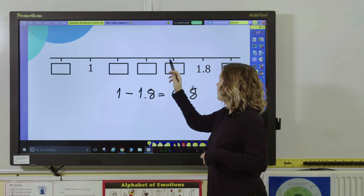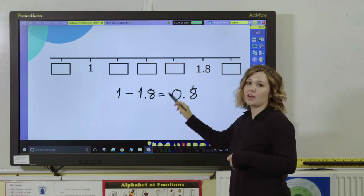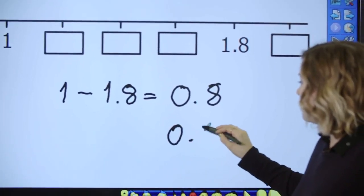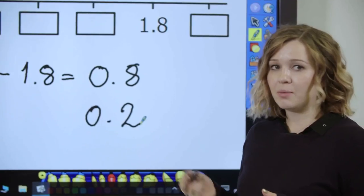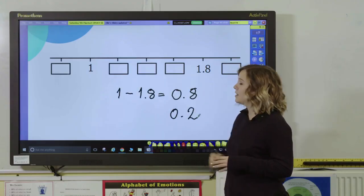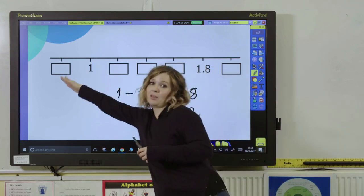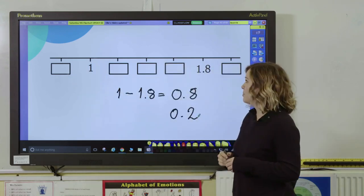1, 2, 3, 4. So we need to divide our 8 tenths, 0.8 by 4 which will give you 0.2. So now we just know that to fill in the unknown values we need to go up by 2 tenths each time or down by 2 tenths if we're going that way on the number line.